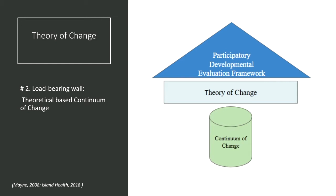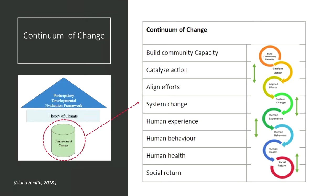On this slide you can see a visualization of the continuum of change, which is very similar to a logic model. It consists of eight non-linear stages along a continuum. The premise is that the initial step towards creating change usually begins somewhere between building capacity and a system change — for example, a policy change — and then moves to impact human experience and behavior. As these changes occur at a population level or across the system, improved overall health and social returns are expected.